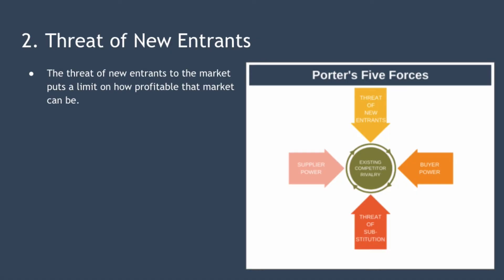The second force is the threat of new entrants, and the threat of new entrants puts a limit on how profitable a market can be. That's because the threat alone will force you and your competitors to keep your prices low to discourage new entrants. If it's easy for new firms to enter your market and compete then profits will obviously be lower across the industry. How easy or difficult it is for a new firm to enter the market will depend upon the industry's barriers to entry. Firms create high barriers by possessing unique intellectual property or unique technology, benefiting from economies of scale, having high brand loyalty, or using vertical integration.